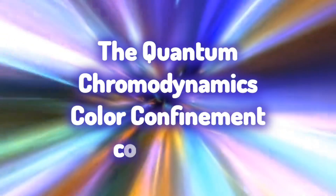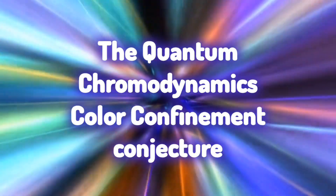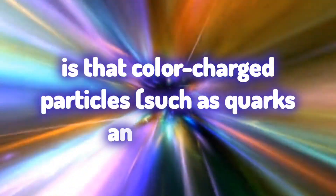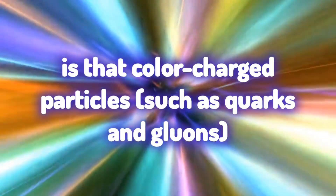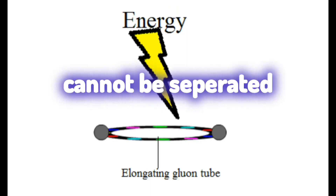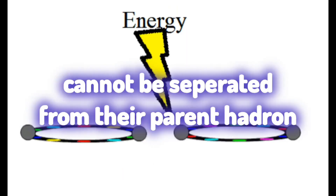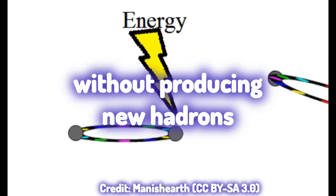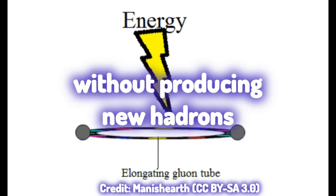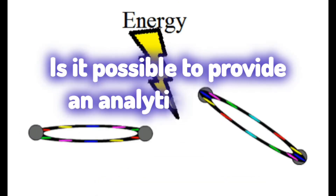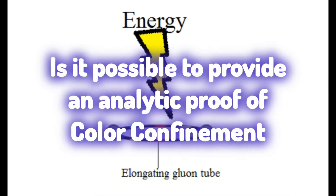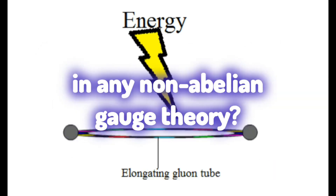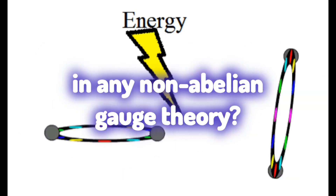Color confinement: the quantum chromodynamics color confinement conjecture is that color-charged particles such as quarks and gluons cannot be separated from their parent hadron without producing new hadrons. Is it possible to provide an analytic proof of color confinement in any non-Abelian gauge theory?